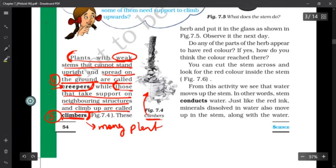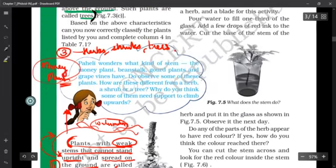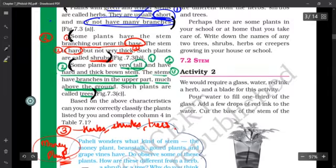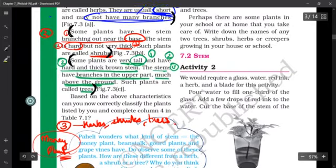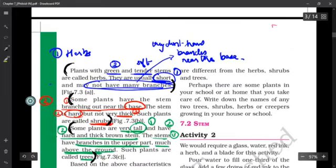A creeper example: if you have seen watermelon, it keeps on spreading on the ground and cannot climb up. So we put it in the creeper category. This is how we have divided the plants into five main categories.